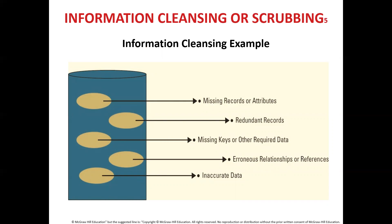Information cleansing allows an organization to fix types of inconsistencies and clean the data in the data warehouse. The types of inconsistencies include missing records or attributes, redundant records, missing keys or other required data, erroneous relationships or references, and inaccurate data.